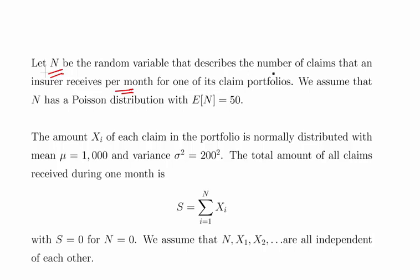N is a conventional Poisson variable. We assume that N has a Poisson distribution with the expected value E[N] equal to 50.